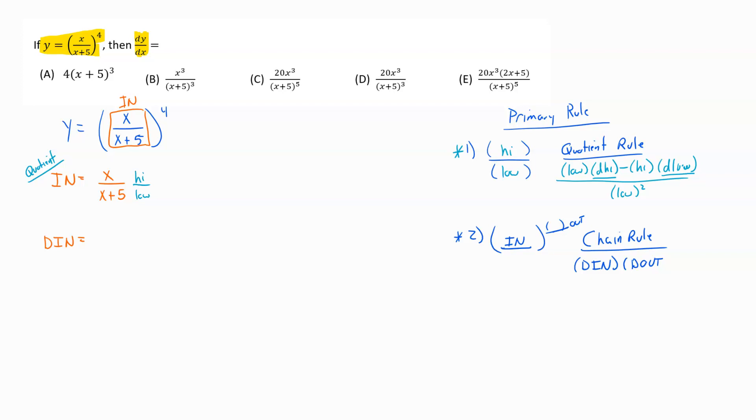The more of these you do, the easier it will be to do this work in your head. But as you're practicing, it's good to break these into bite-sized problems. So the high is x, the low is x plus 5. Now I need to go find the d high, the derivative of the high.